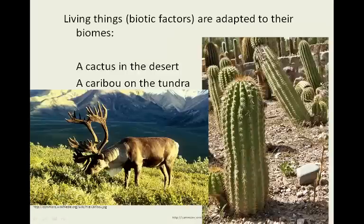Living things are adapted to their environment. For example, a cactus is very well adapted to the desert — it's very good at using minimal water and still surviving. It has prickly spines to keep opportunistic animals away so they don't take its precious water, and it has very minimal leaves. In fact, the spines are the leaves; it does photosynthesis through the green stalk, but it reduces the size of its leaves to minimize the amount of water lost through transpiration.